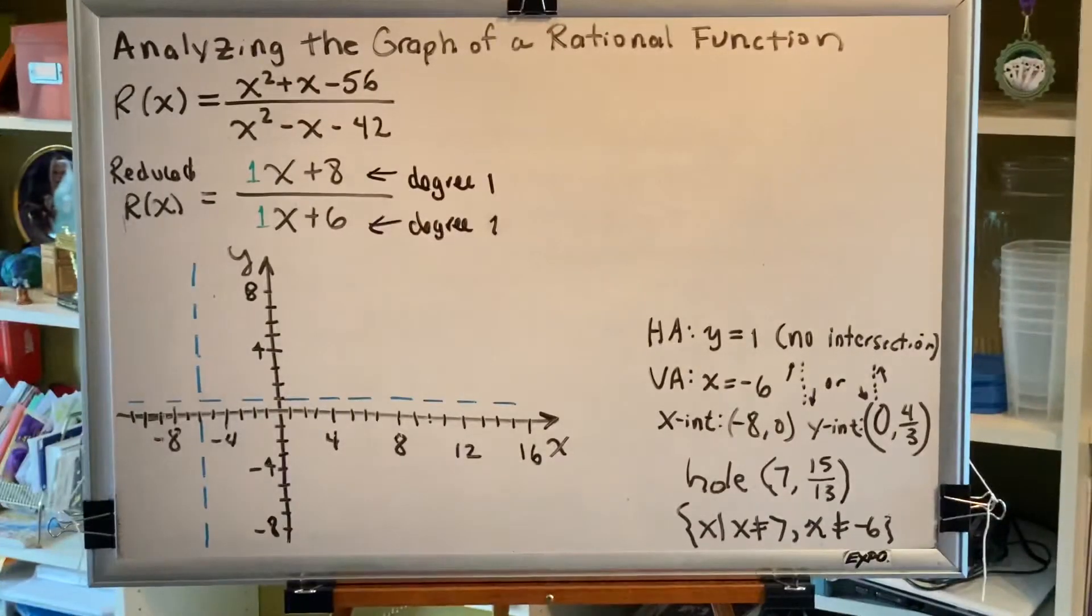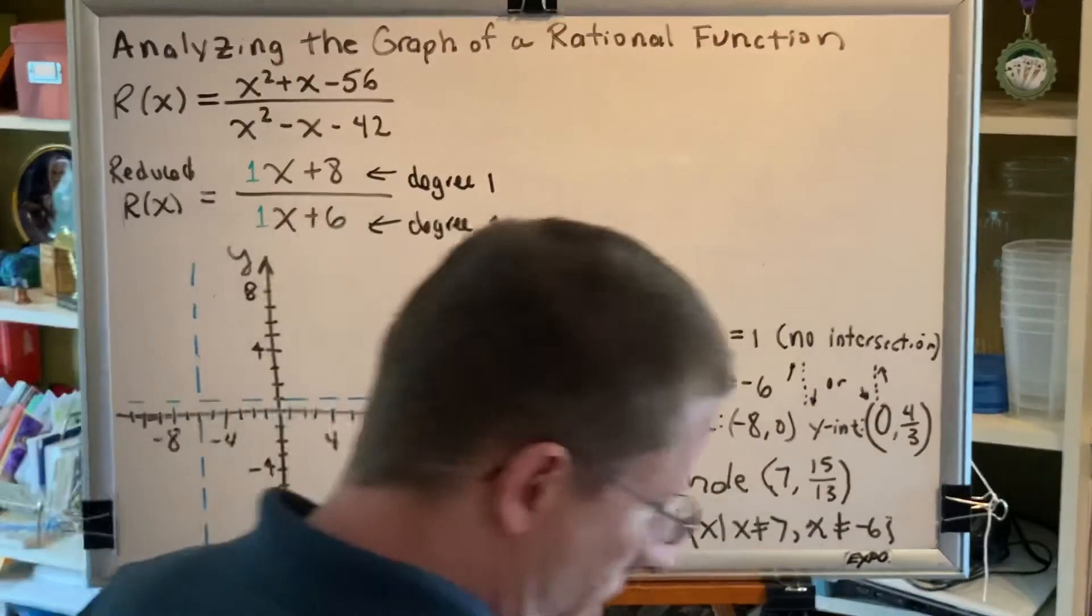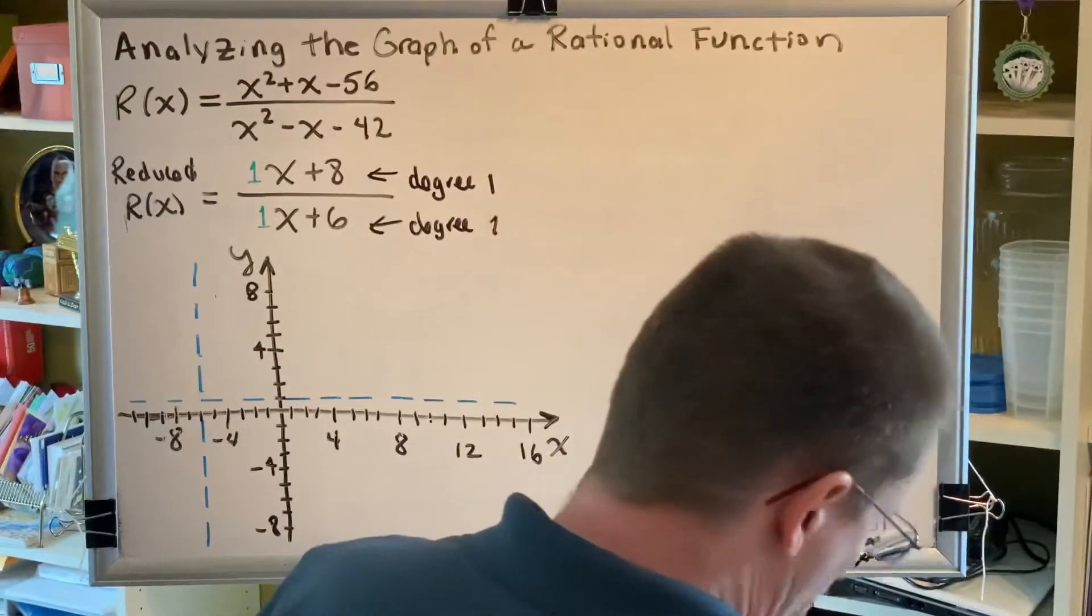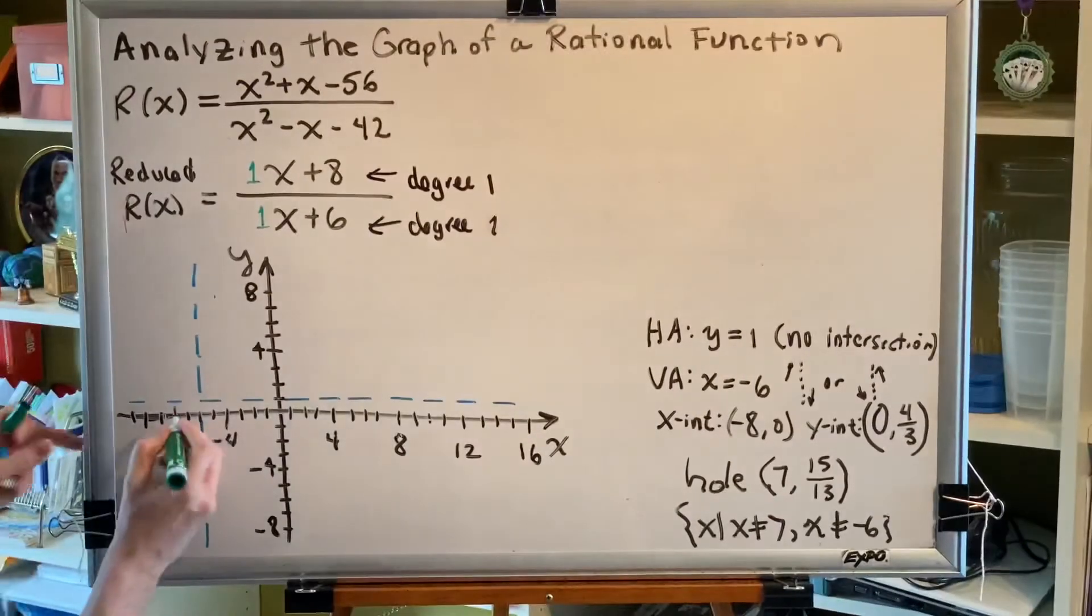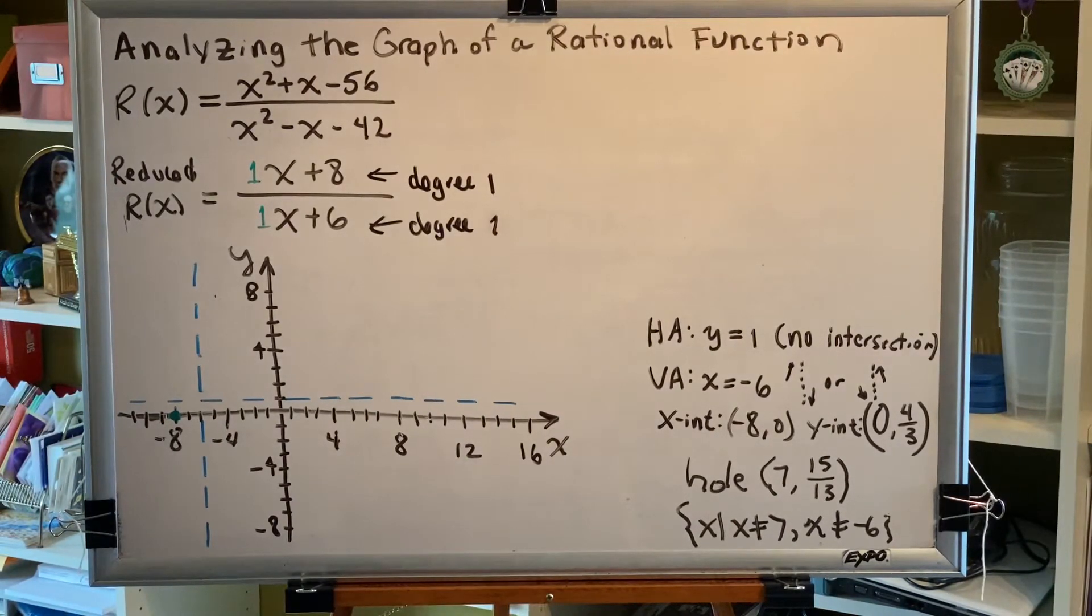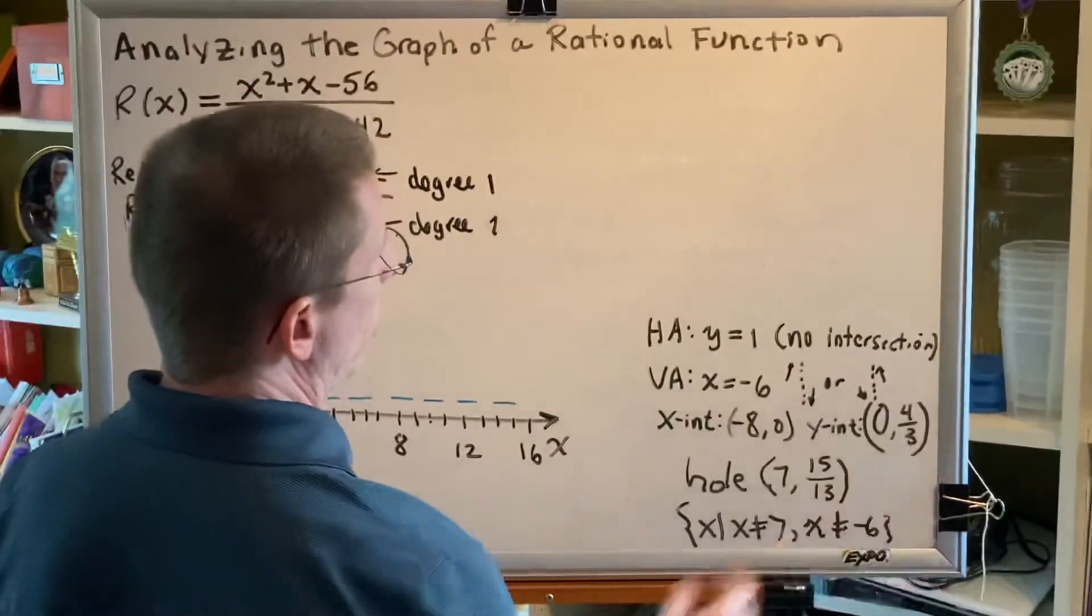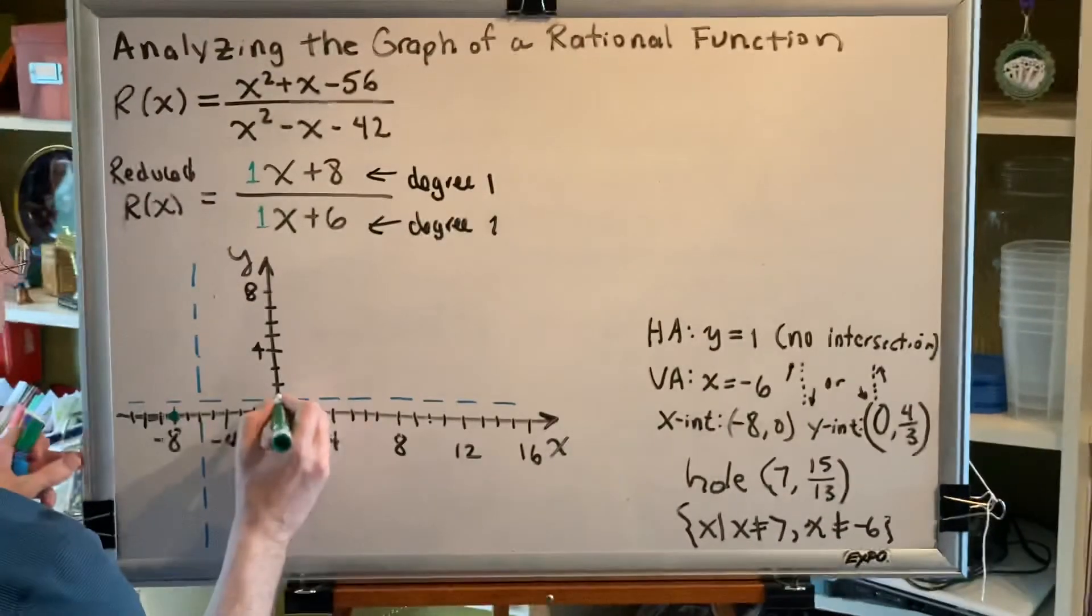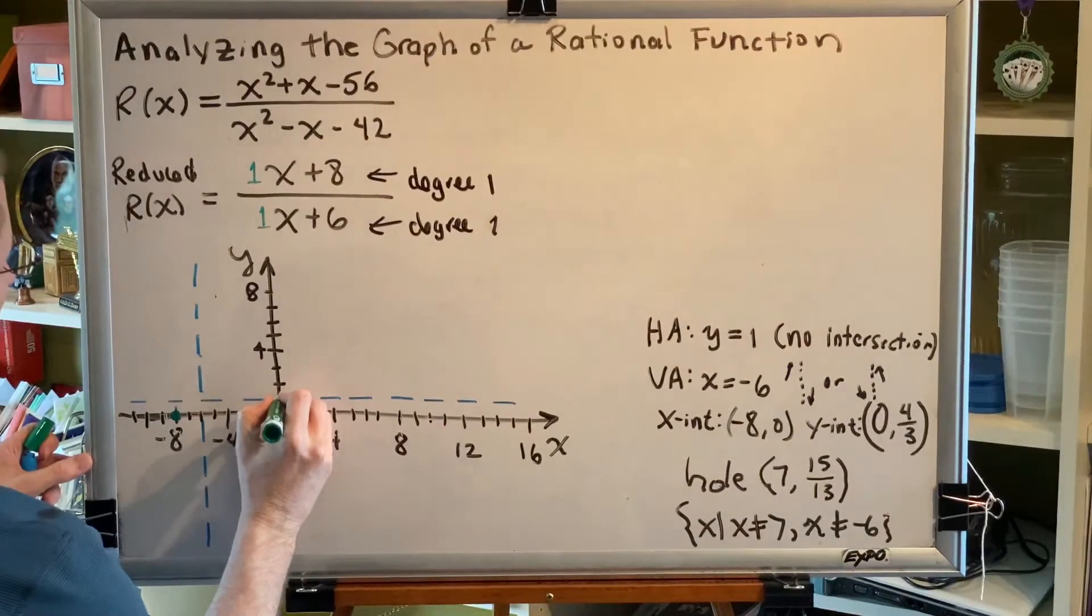Our x-intercept is negative 8 comma 0, so that would be this point right here. Our y-intercept is 0 comma 4 thirds. 4 thirds is the decimal 1.3 repeating, so just a little bit higher than 1. That would be here.